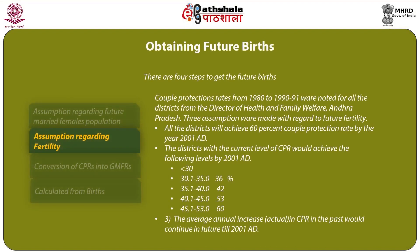In Step 2, regarding fertility assumptions, couple protection rates (CPRs) from 1980 to 1990-91 were noted for all districts from the Directorate of Health and Family Welfare, Andhra Pradesh. Three assumptions were made about future fertility: (1) all districts will achieve 60% couple protection rate by 2001 AD; (2) districts with current CPR levels will achieve target levels by 2001 — specifically, less than 30% reaches 36%, 30.1–35.0% reaches 36%, 35.1–40.0% reaches 42%, 40.1–45.0% reaches 53%, and 45.1–53.0% reaches 60%; (3) the average annual increase in CPR observed in the past would continue into the future till 2001 AD.